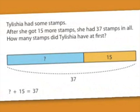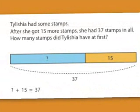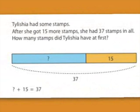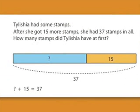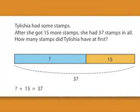Let me give a specific example. Let's say Tyleesha had some stamps, and then she got 15 more stamps, and after that she had 37 stamps altogether. We can ask: how many stamps did Tyleesha have at first? Students who hear the words 'altogether' and 'more' in that problem statement will be tempted, if they're taught to use keywords, to add the numbers 15 and 37.